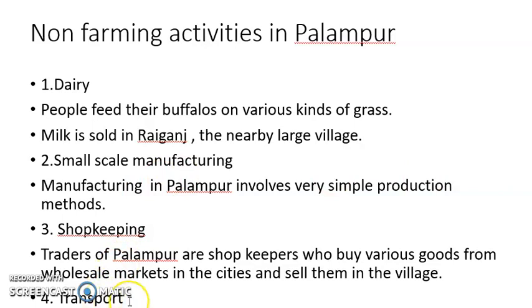Transport is another non-farming activity in Palampur. On Palampur roads we can see various types of transport and vehicles — for example, bullock carts, bogies, tongas, jeeps, and trucks — which are used as means of travel by the Palampur people. So transport is another important non-farming activity.